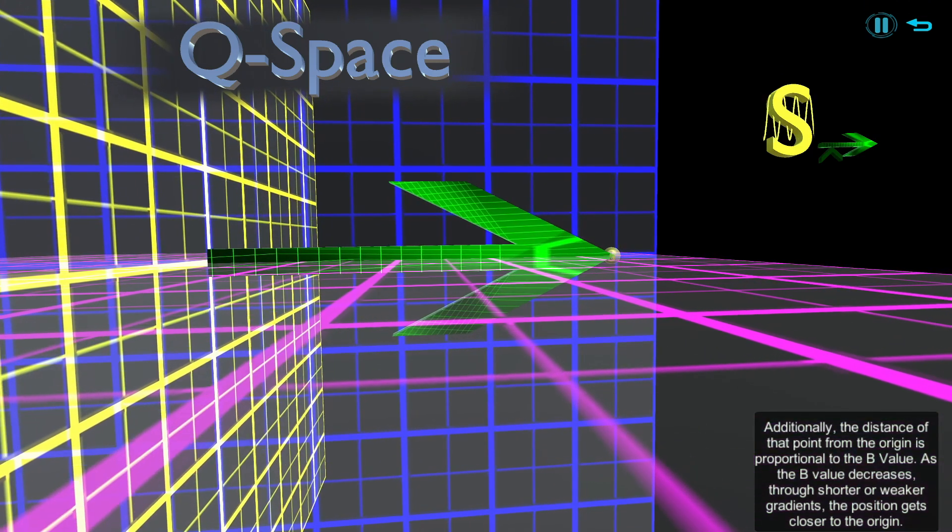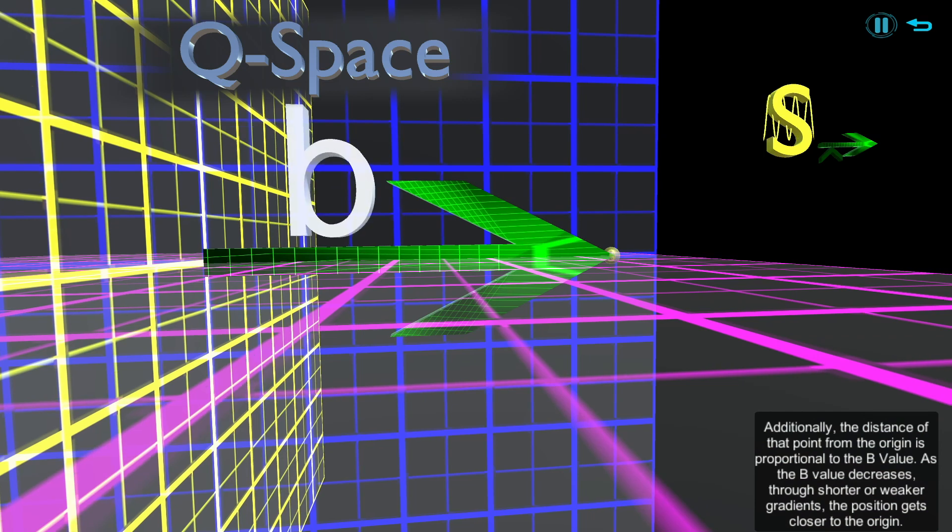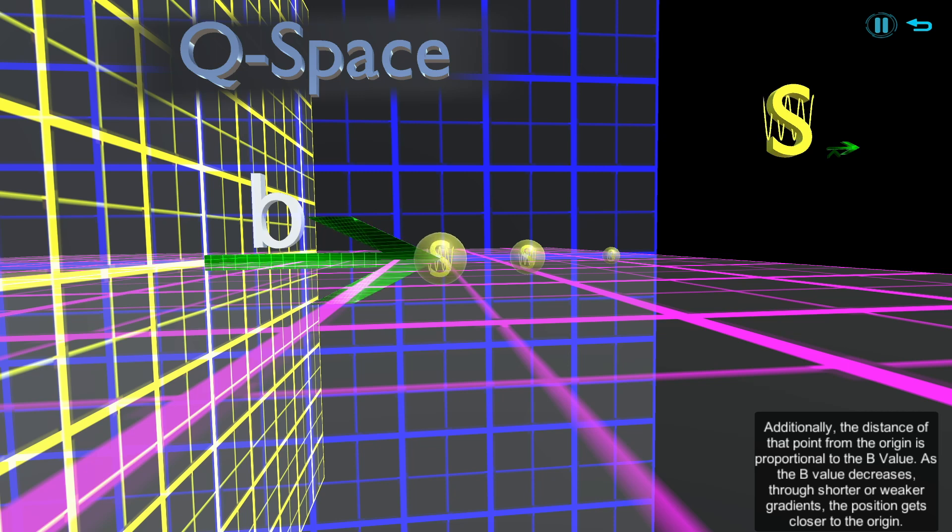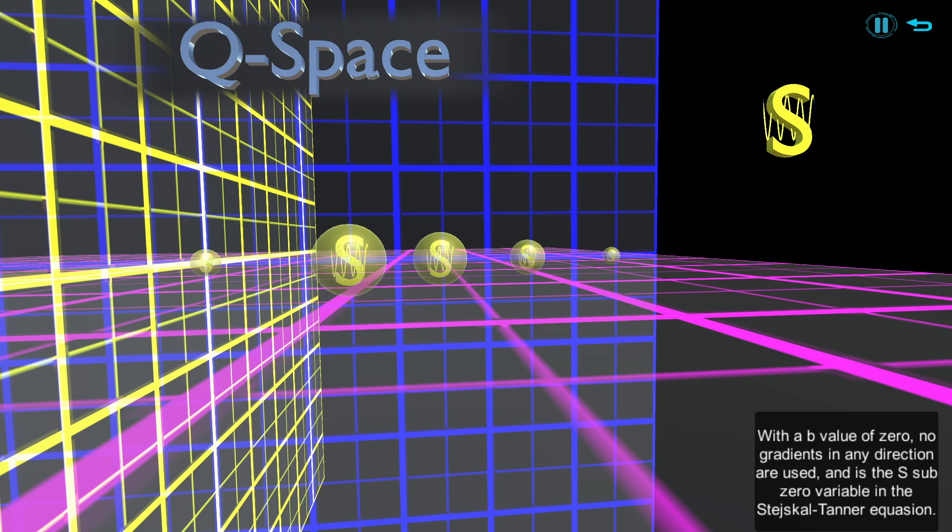Additionally, the distance of that point from the origin is proportional to the b-value. As the b-value decreases through shorter or weaker gradients, the position gets closer to the origin. With a b-value of 0, no gradients in any direction are used, and is the s sub-zero variable in the Stejskal-Tanner equation.